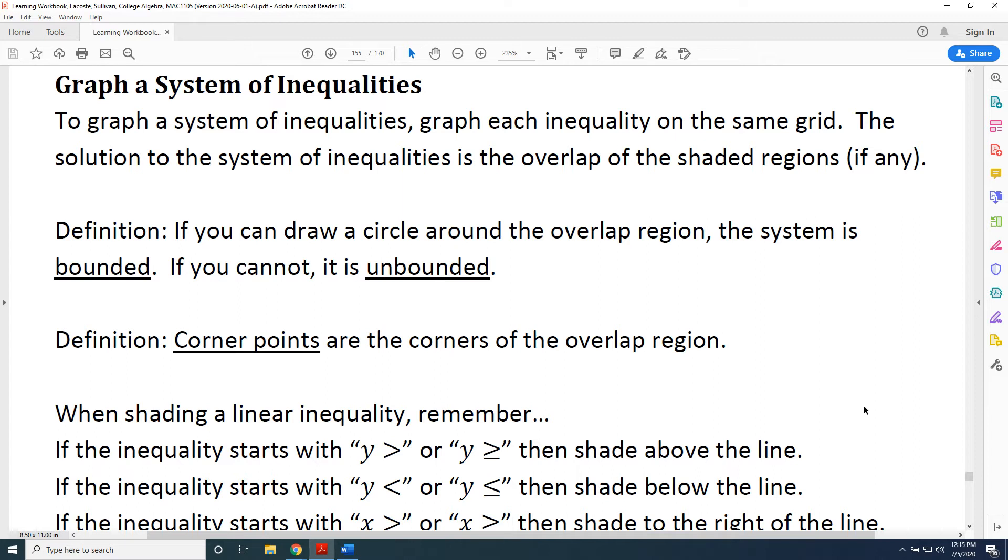We have a few definitions. First, if you can draw a circle around the overlap region, the system is bounded. If you cannot, it is called unbounded.